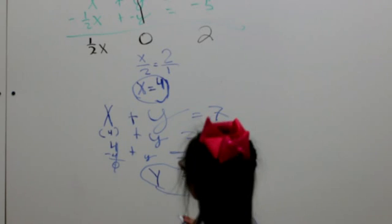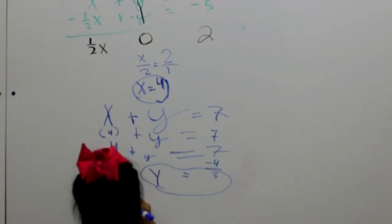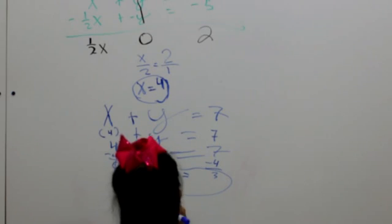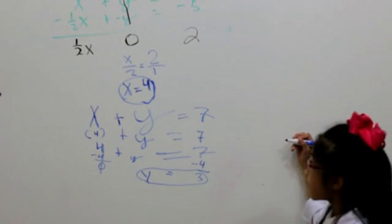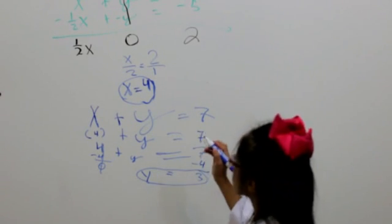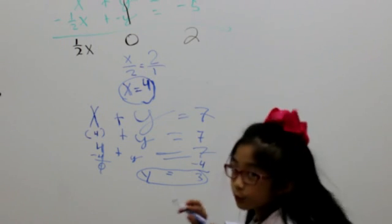Amazing, huh? Now, you copy that equation. x plus y equal to 7. Now, I'm going to substitute the x and y into my equation to prove that's right.